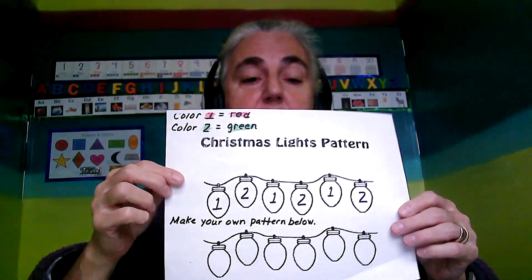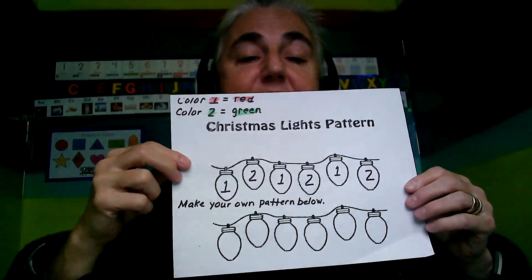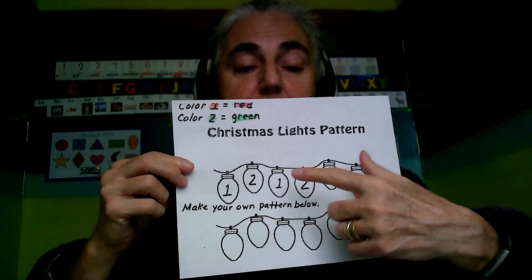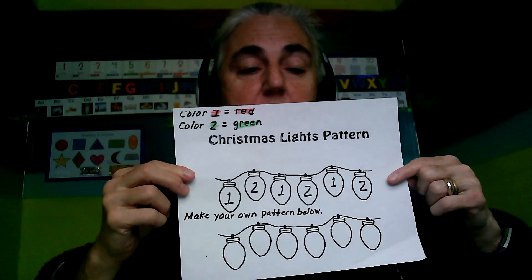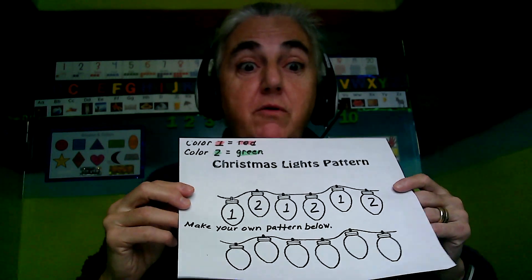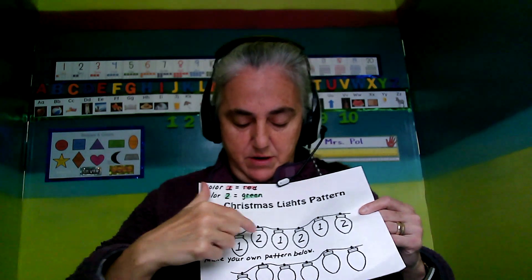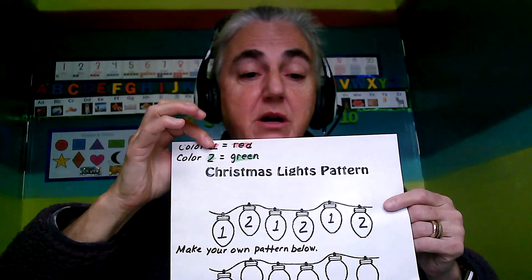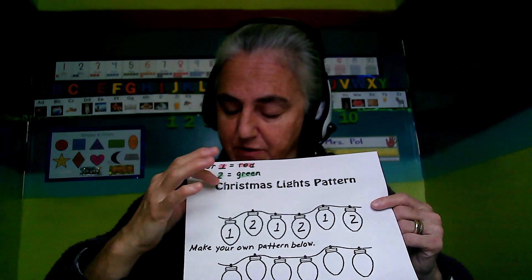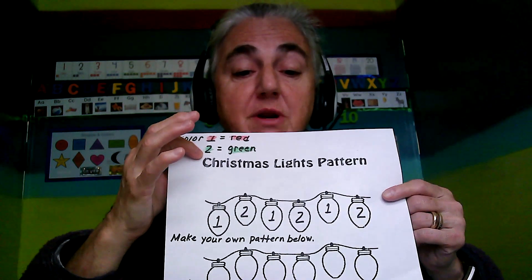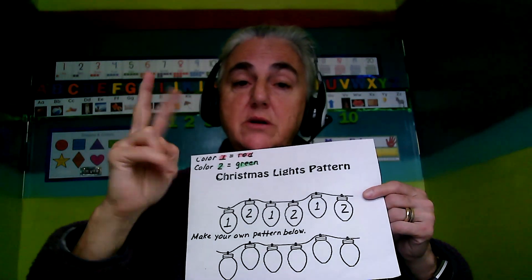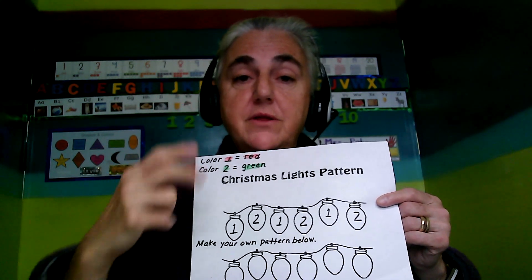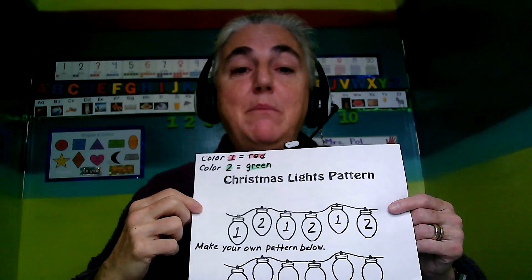I'd like you to see what kinds of patterns you can find around, but first we're going to make patterns with this paper right here. This is a Christmas light pattern. The first row has a pattern coded for you — you see it has a number one and a two, and a one and a two, repeating. Everything with a number one should be colored red, and everything with a number two should be colored green.